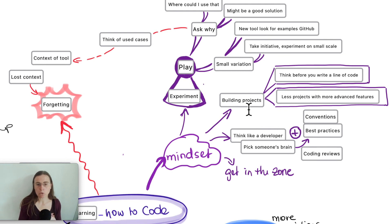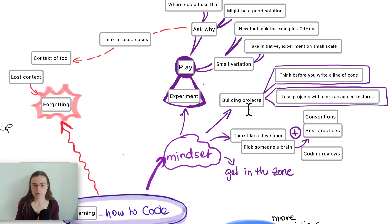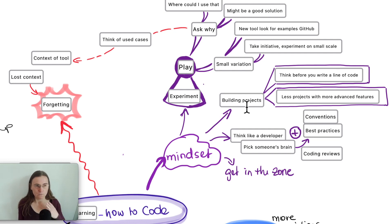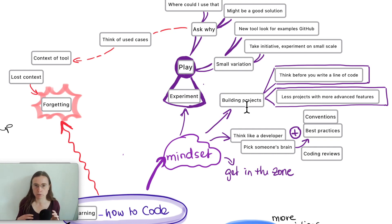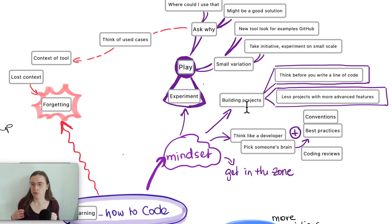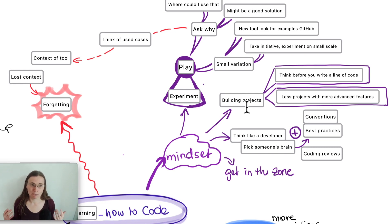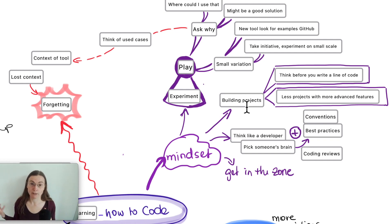Now I want to talk about mindset. The most typical advice for developers is to build as many projects as you can. This is kind of true, but I'd add a nuance: if you build a lot of smaller projects you might end up building the same features over and over. Instead, have fewer projects with more advanced features, or just build one part of an app — one screen or one login part — to concentrate on what you actually want to learn and experiment with.